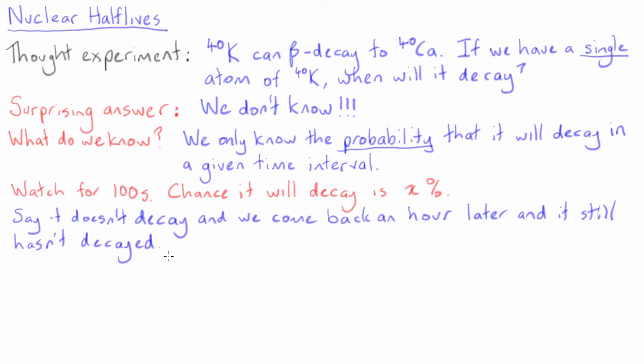But let's say that this particular potassium-40 nucleus doesn't decay in that first 100 seconds. Perhaps we walk away and come back an hour later, and it still hasn't decayed. Here we have to deal with something really interesting and somewhat counterintuitive. The probability of that particular potassium-40 nucleus decaying in the next 100 seconds is exactly the same as it was in that first 100 seconds over an hour ago.